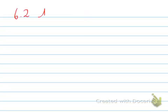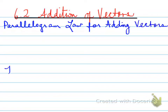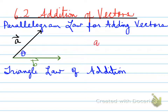We're looking at 6.2 addition of vectors. There is a parallelogram law for the addition of vectors and there is a triangle law of addition of vectors. The first thing we're looking at is how to make a parallelogram when we're adding two vectors. Say we have vector A, and from vector A we add another vector B such that the angle between vector A and vector B is theta.